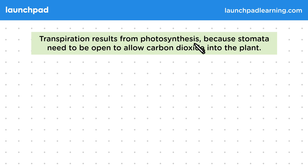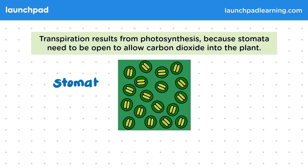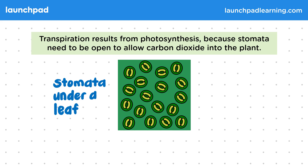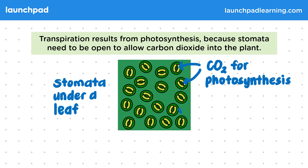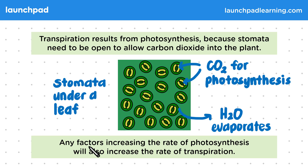Transpiration results from photosynthesis because stomata need to be open to allow carbon dioxide into the plant. This diagram shows a close-up view of the underside of a leaf showing the closed stomata. The stomata open to allow carbon dioxide in for photosynthesis, and they also allow water to evaporate out away from the leaf. Any factors increasing the rate of photosynthesis will also increase the rate of transpiration, due to the link between transpiration and open stomata.